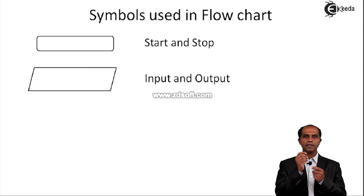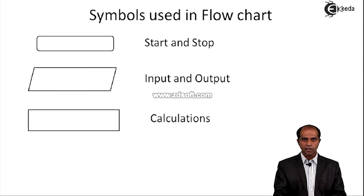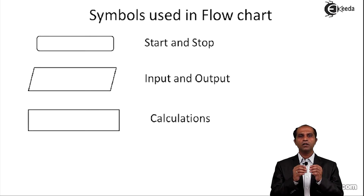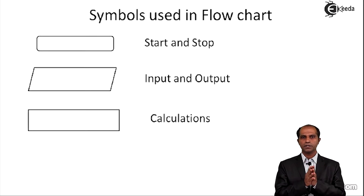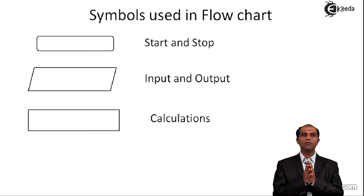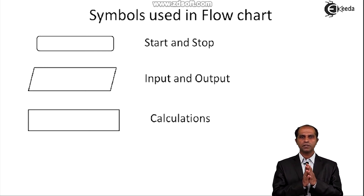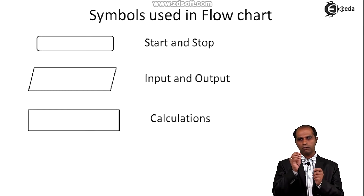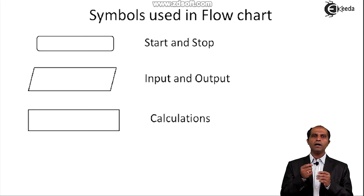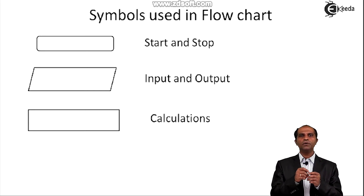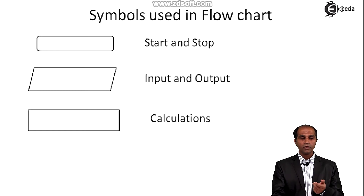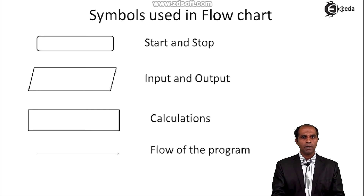The third symbol is a rectangle, used to show calculations or processing steps. If you have mathematical formulas, assignment instructions, or equations assigned to a variable, those are written inside rectangles. A parallelogram and a rectangle both have input as well as output arrows, whereas start has only output and stop has only input.